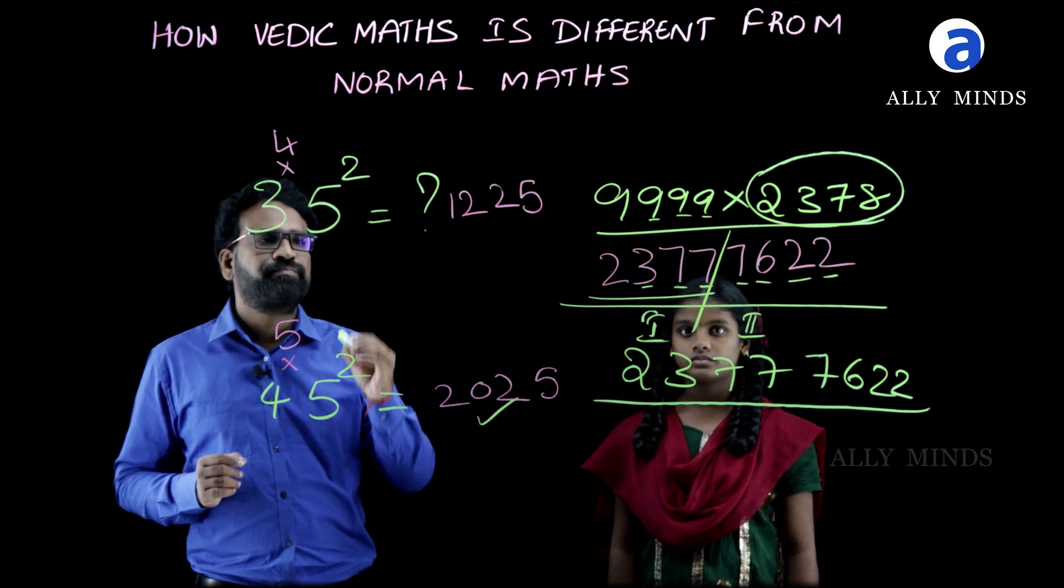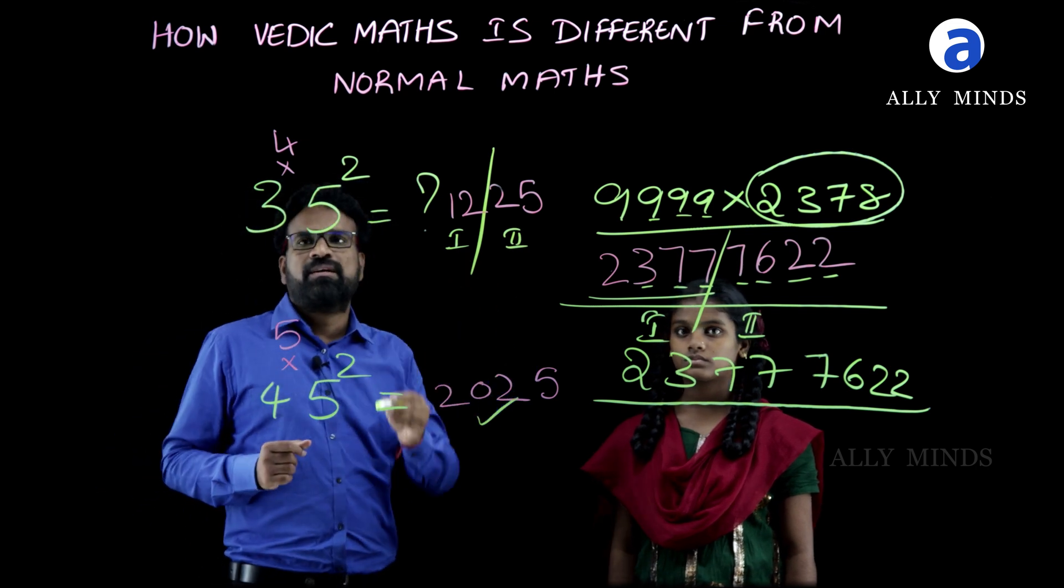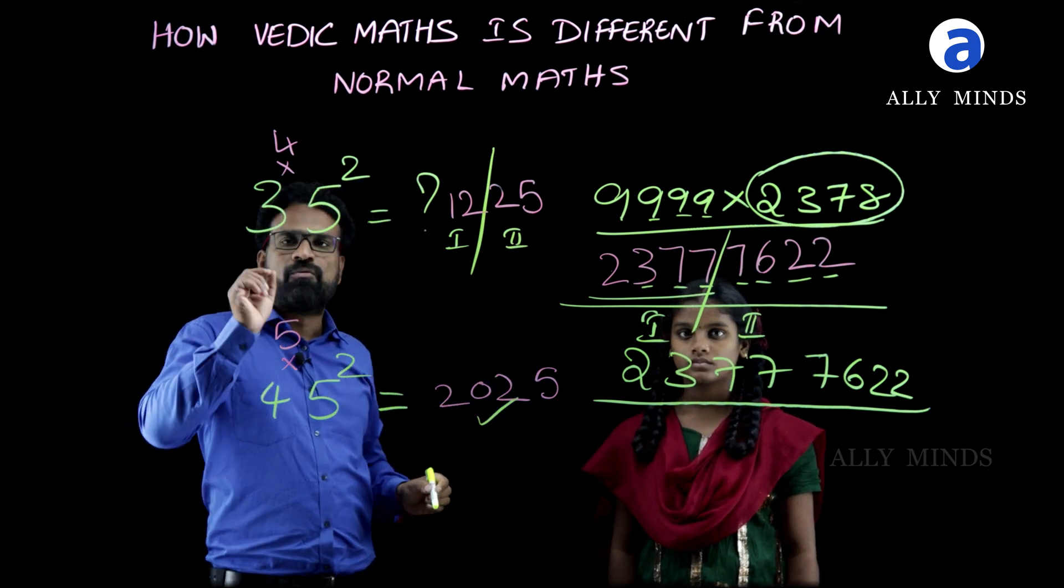Very good Janani, very good. See, here we get this answer in two parts: first part and second part. For the first part, we have to take one more than the number what we are having. Here we got three.